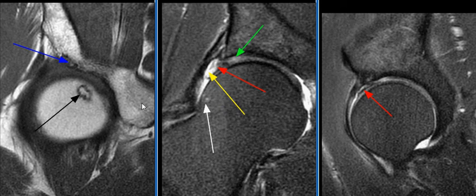A small focus of avascular necrosis is also seen in the femoral head, as seen on this image with the black arrow.